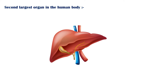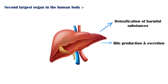The liver is the second-largest organ in the human body, and it is responsible for many important functions. Some of these functions include bile production and excretion, detoxification of harmful substances, including drugs, toxins, and alcohol.